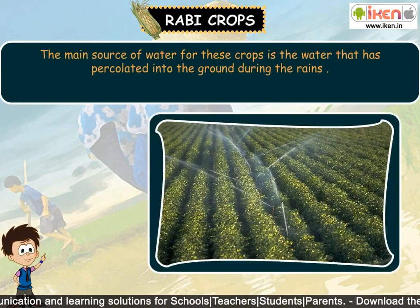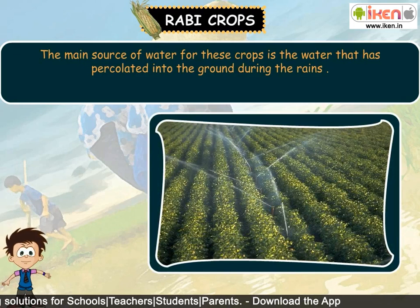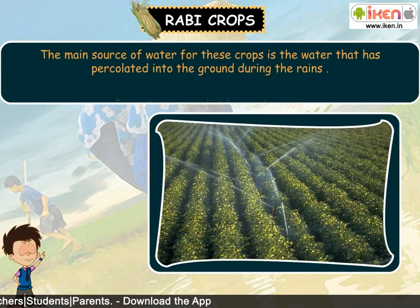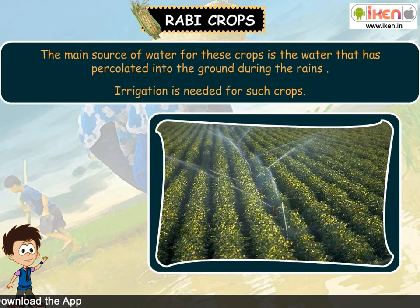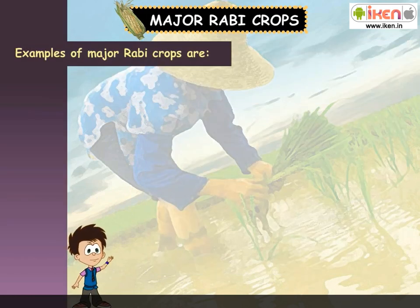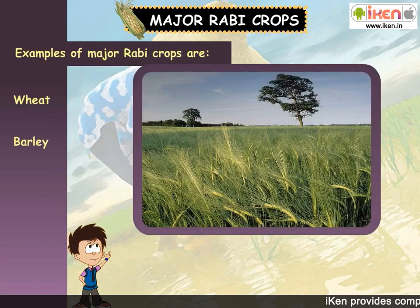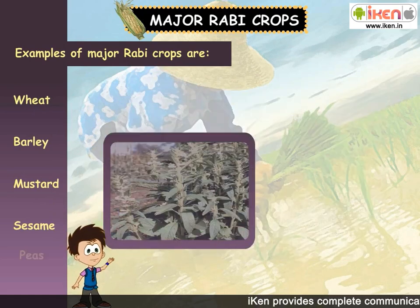The main source of water for these crops is the water that has percolated into the ground during the rains. Irrigation is needed for such crops. Examples of major Rabi crops are wheat, barley, mustard, sesame and peas.